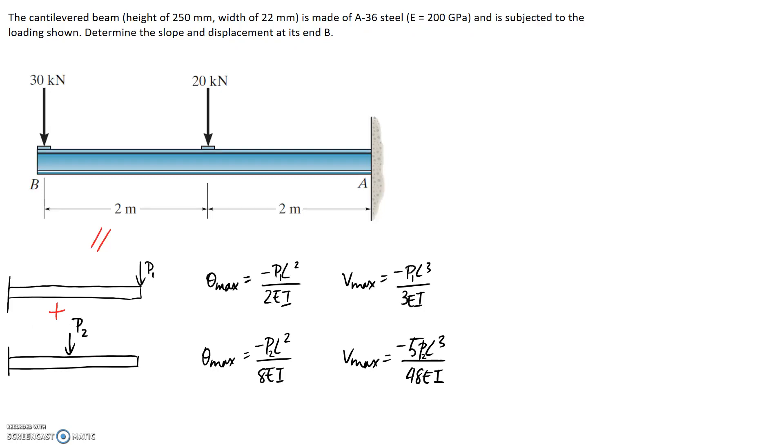Let's go ahead and first of all, before we actually do that step, calculate the I value that's going to enter in that equation. So remember that I is a property of your cross section of your beam. We're told that our cantilevered beam has a height of 250 and a width of 22 millimeters, so it would suggest it looks something like this.